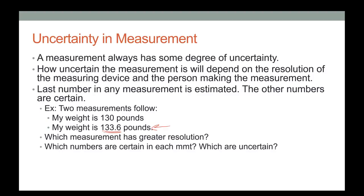Which numbers are certain in each measurement? On the analog scale, the 1 and the 3 are certain; the zero is an estimate — it might be 131 or 129. The uncertain number is always the last one.